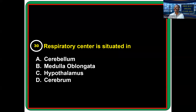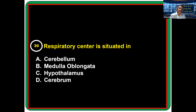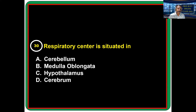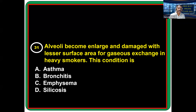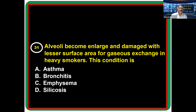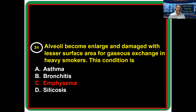Respiratory center is situated in the medulla oblongata. Alveoli become enlarged and damaged with lesser surface area for gaseous exchange in heavy smokers — this condition is called emphysema.